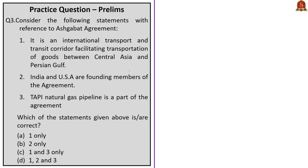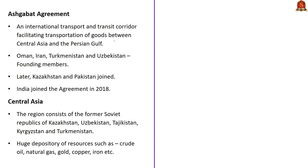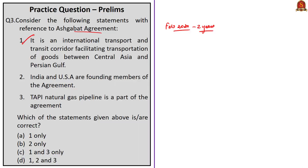The next question is based on the Ashgabat Agreement. India joined the Ashgabat Agreement in February 2018, completing two years as of February 2020. It is an international transport and transit corridor facilitating transportation of goods between Central Asia and the Persian Gulf. The founding members are Oman, Iran, Turkmenistan, and Uzbekistan. Later, Kazakhstan and Pakistan joined. India joined in February 2018. So the first statement of this three-statement question is correct, and the second is wrong — neither India nor the US are founding members. The third statement — that the TAPI natural gas pipeline is part of this agreement — is also wrong. The correct answer is option A, one only.